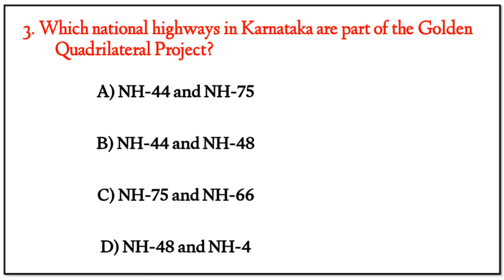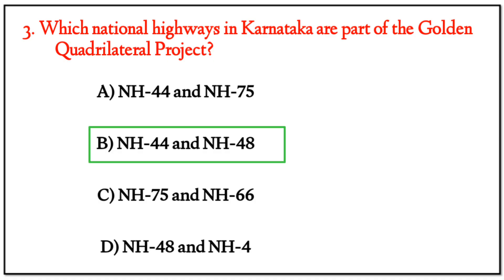MCQ Question 3: Which national highways in Karnataka are part of the Golden Quadrilateral project? The correct answer is option B — National Highway 44 and National Highway 48.